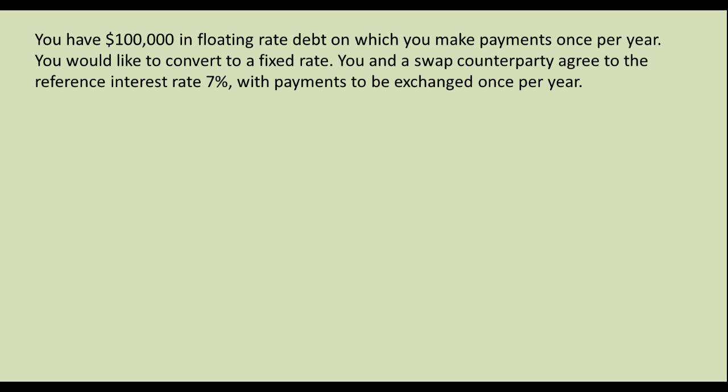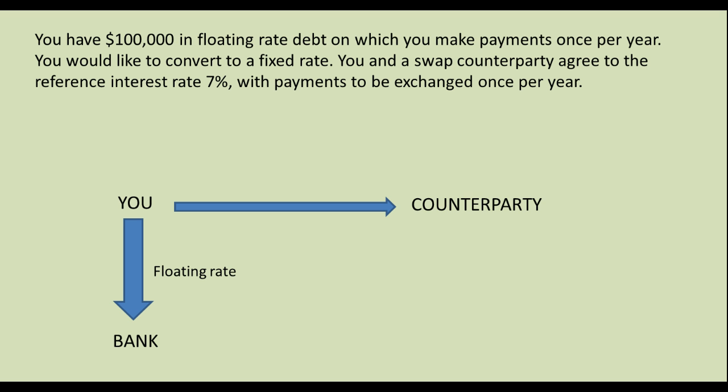I advise that you always make a diagram when you are looking at a problem like this, because there can be multiple people involved and money going multiple directions. So here you have $100,000 in floating rate debt, and you are making a payment to a bank at the floating rate. You are going to convert that to a fixed rate with a counterparty. You have agreed to a fixed rate of 7%, so you are going to be paying the counterparty $7,000. In exchange, the counterparty is going to pay you the floating rate — so you and the counterparty are exchanging a fixed rate for a floating rate.